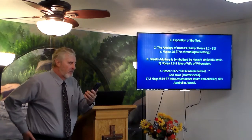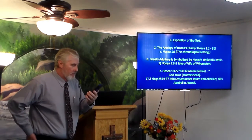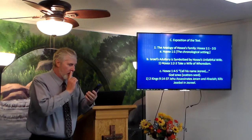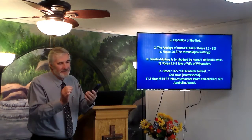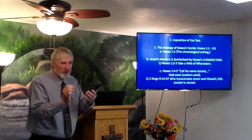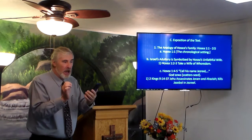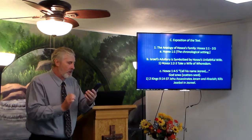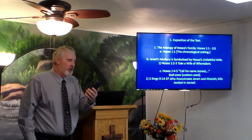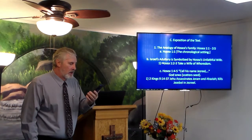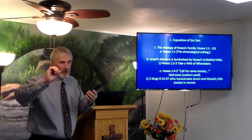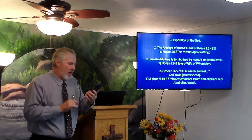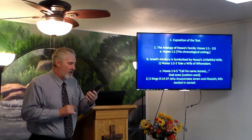The son — verse 4 and 5 — talking about this oldest son. The Lord said to him: call his name Jezreel. For in just a little while, I will punish the house of Jehu for the blood of Jezreel, and I will put an end to the kingdom of the house of Israel. Guaranteed. The northern kingdom is going to be destroyed. And on that day, I will break the bow of Israel in the valley of Jezreel.